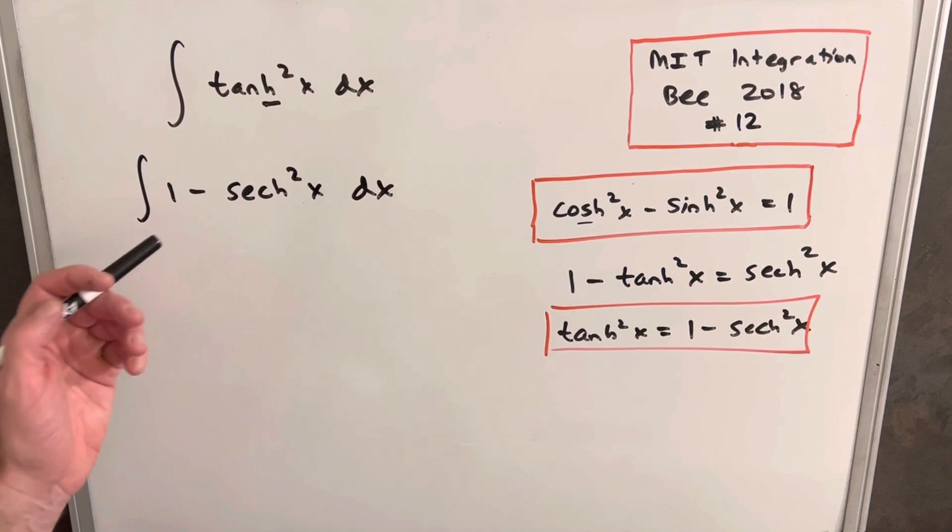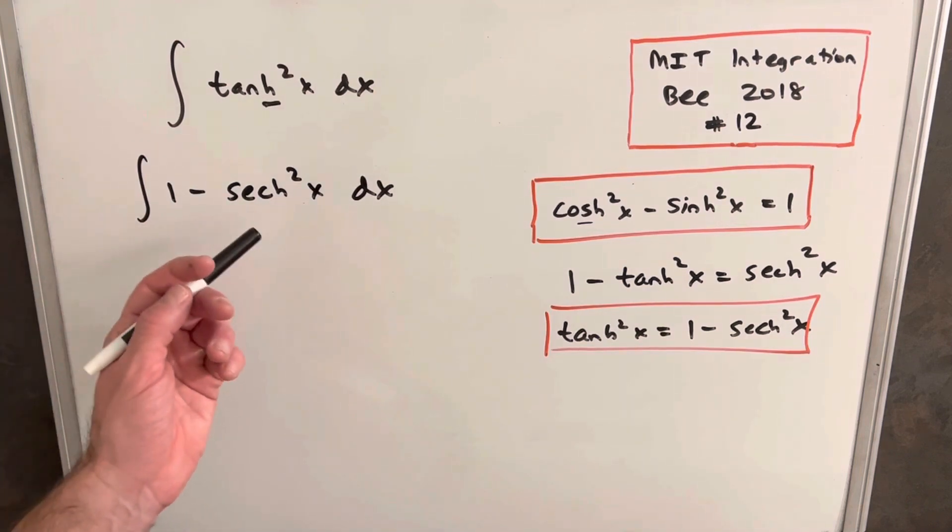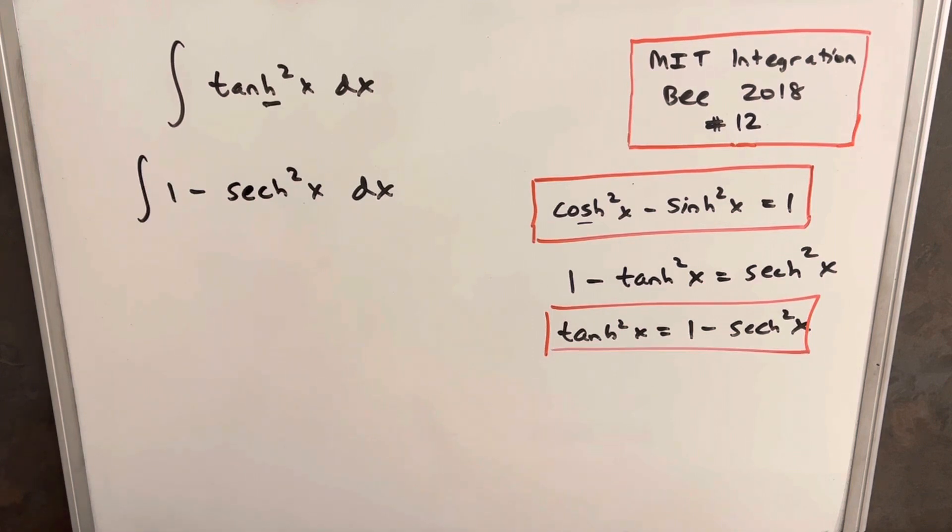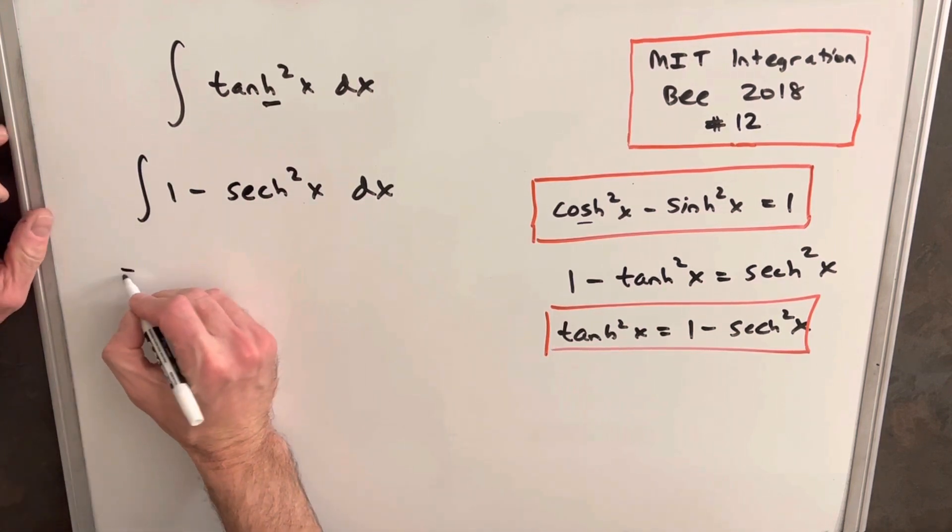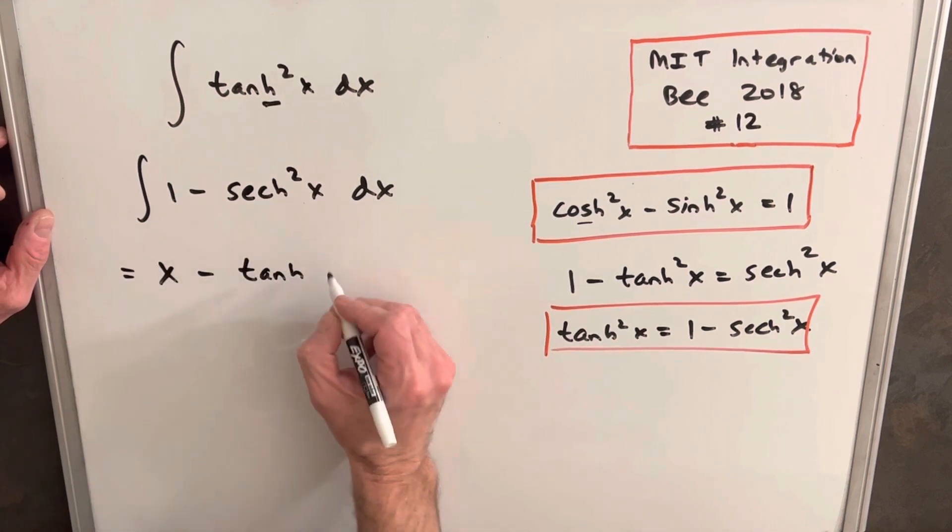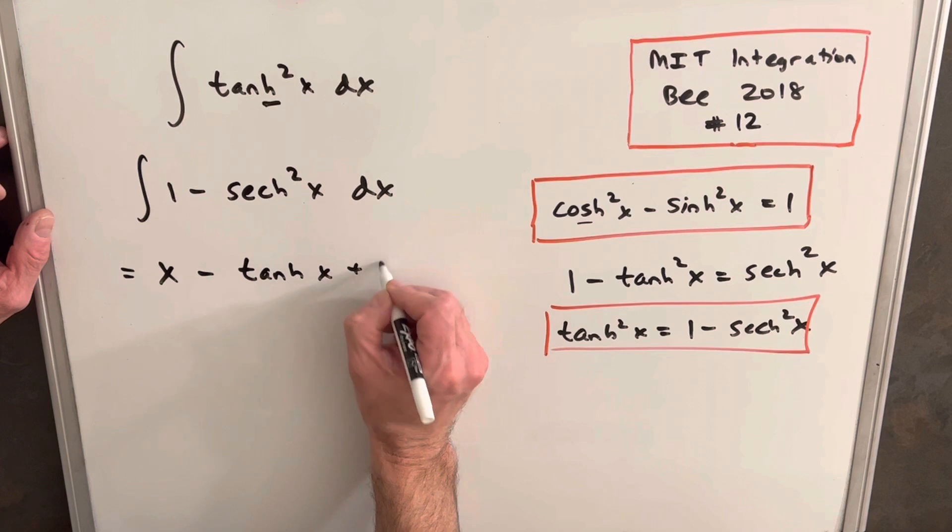So now that we've rewritten this, we see 1 is something that we know how to integrate. And then hyperbolic secant squared, the integral of that is actually just hyperbolic tangent. So this is going to be x minus hyperbolic tangent x plus c.